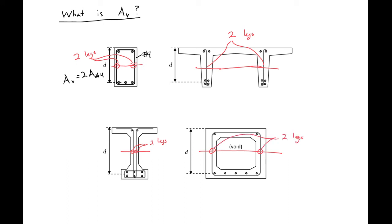In our box section as drawn we would also have two legs. You may have different reinforcement configurations, but drawing a line across the mid-height of the cross section and seeing how many legs cross that line will help you determine how many legs to consider in the shear strength of your section.